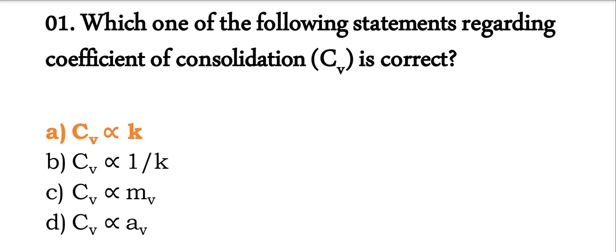My first question: Which one of the following statements regarding the coefficient of consolidation is correct? Options are: Cv is proportional to coefficient of permeability, Cv is inversely proportional to coefficient of permeability, Cv is proportional to Mv, and Cv is proportional to Av. The correct answer is Cv is proportional to K, that is coefficient of consolidation is proportional to permeability.